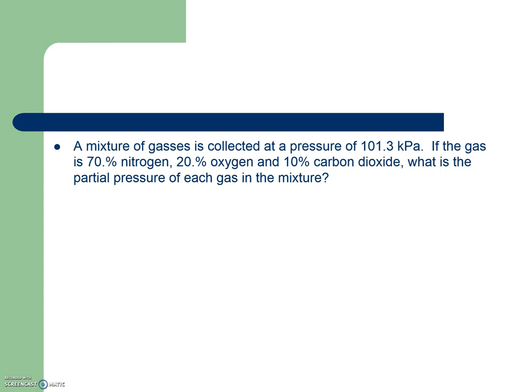In this example, a mixture of gas is collected at a pressure of 101.3 kilopascals. If we know the gas is 70% nitrogen, 20% oxygen, and 10% carbon dioxide, here we'll put a decimal here to be consistent, what is the partial pressure of each gas in the mixture?